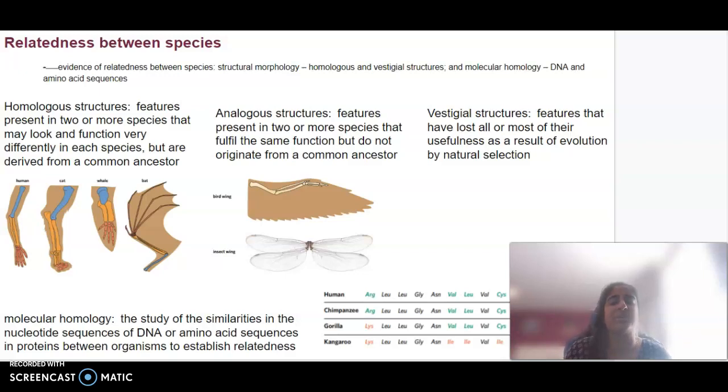We can identify what we call homologous structures - features present in different species that may look and function differently but are derived from a common ancestor. You can see here some examples of homologous structures.